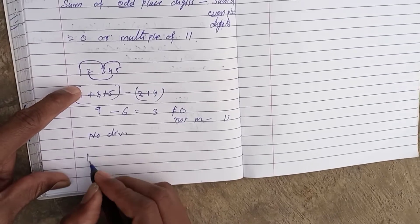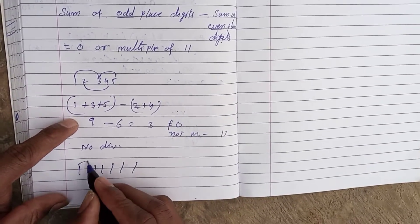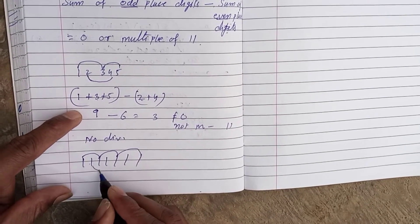Let's take another example: 1, 1, 1, 1, 1, 1. We take the digits in odd positions, leaving those in even positions. We take one, leave one, take one, leave one, take one, leave one.